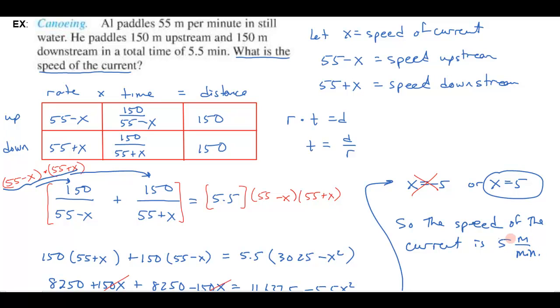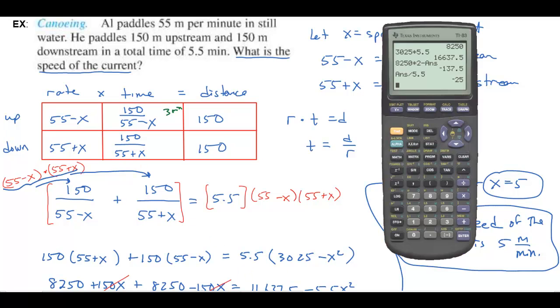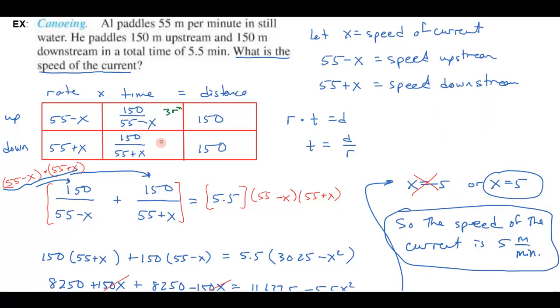Let's check and see if this would make sense. Going upstream, this would be 55 minus 5, so that would be 50. And 150 over 50 does end up being like 3 minutes up. Going downstream, 150 over 55 plus 5, that would be 150 over 60. 150 divided by 60, wow, look at that. That's two and a half minutes.